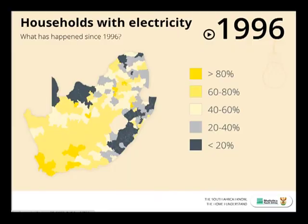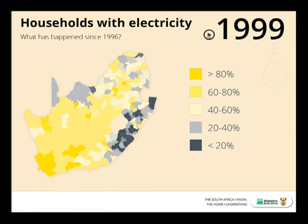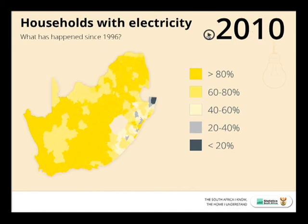Mr. President, finally, let's look at the story of electricity. We have turned it yellow so that you can understand. There it is in 1996 — the dark spots reflect where electricity is lower; the yellow spots show where electricity is present. You can see in the Western Cape it was already covered. Let's see what the story is as we go through — the country turning yellow. Like a census, every year from 2001 to 2003, the country is turning yellow. It's 2007, the country is turning more yellow. 2010 — the entire country is yellow. Mr. President, these are the results. This is the story of South Africa — the South Africa I know, the home I understand. These are the results of Census 2011 that we have just presented to ourselves and the nation. Thank you very much.